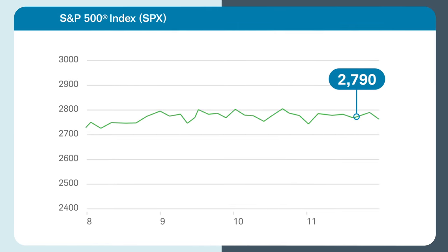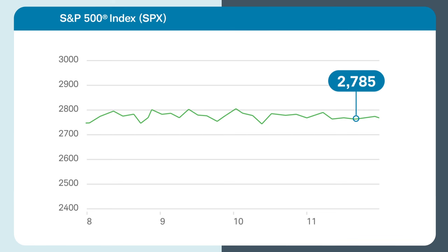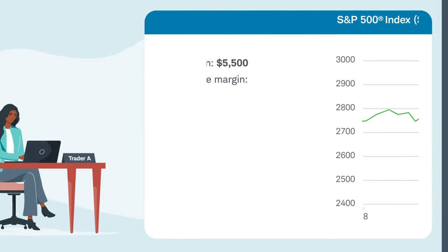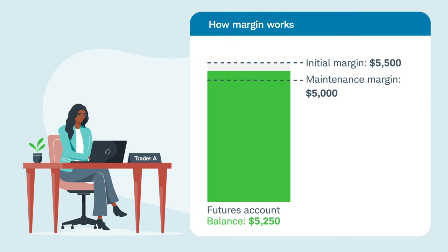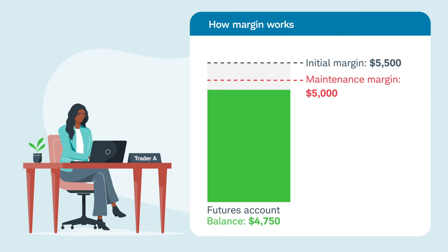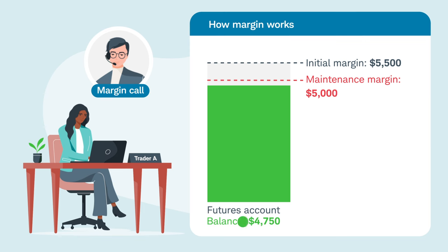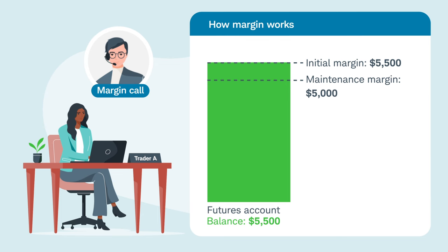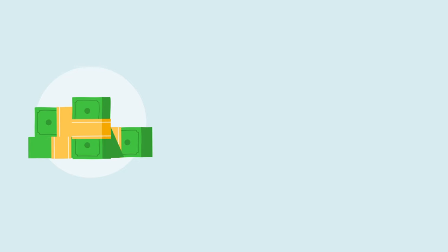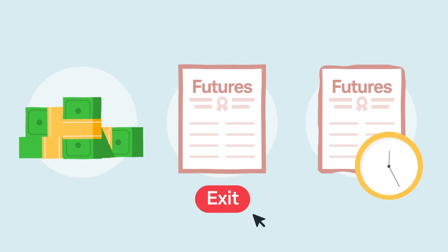The next day, the S&P 500 continued to slide and lost another 10 points, or $500. Because Trader A lost another $500 after settlement, her account fell to $4,750, which is below the maintenance margin of $5,000. Because Trader A's account balance is below the maintenance margin requirement, she has been issued a margin call. In order for Trader A to stay in the trade, she must bring her account balance back up to the initial margin requirement of $5,500. This could include depositing more money, closing the position, or having her existing position appreciate.